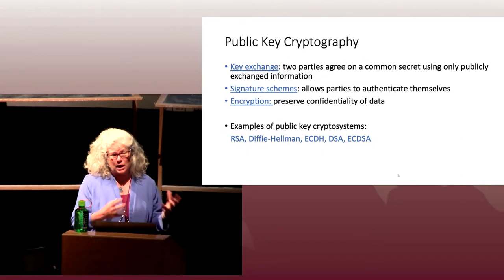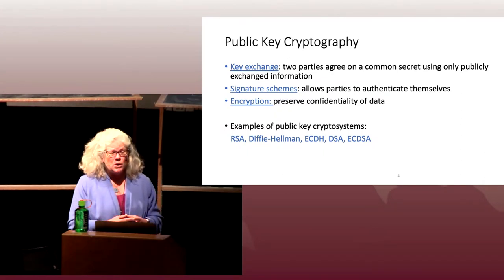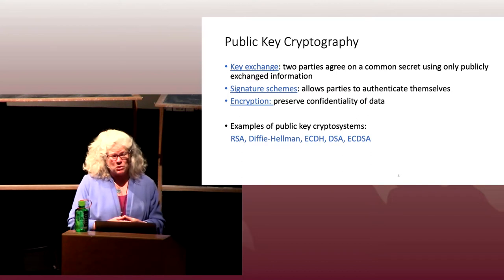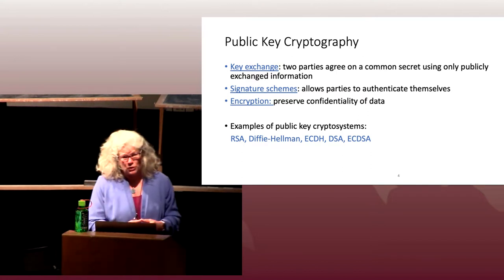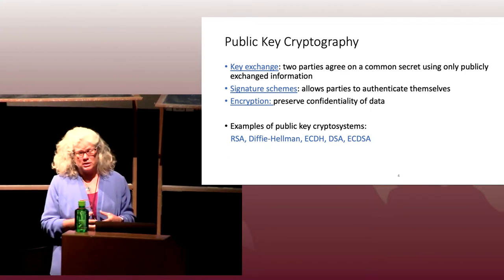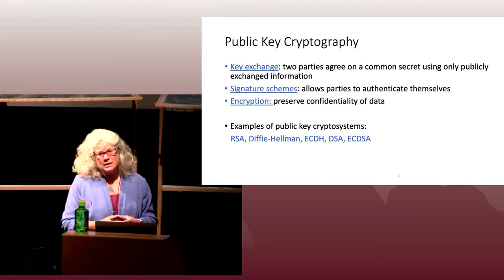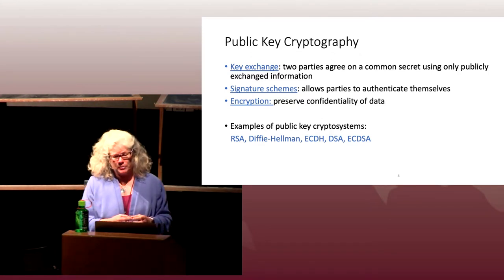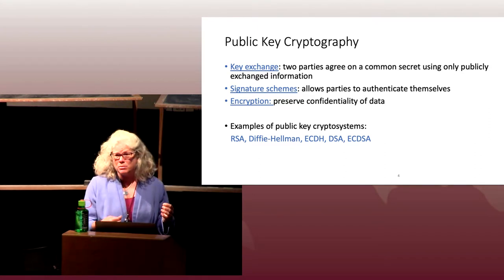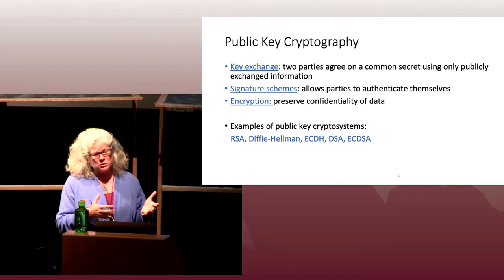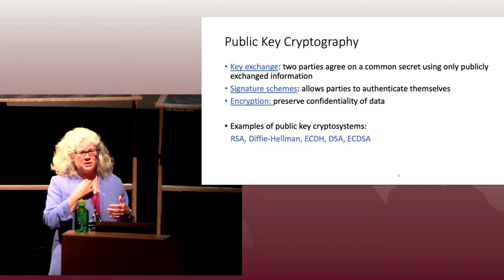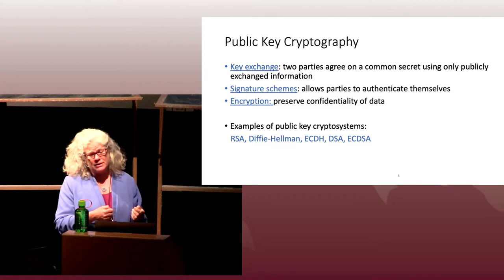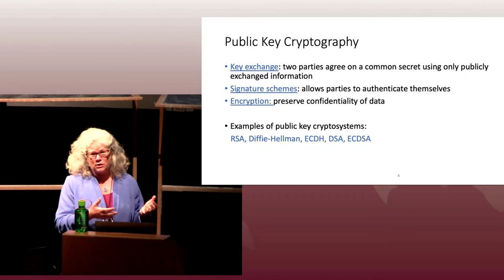Key exchange allows two parties to agree on a common secret using only publicly exchanged information, whereas signature schemes provide some mechanism to allow parties to authenticate themselves. When we say public key cryptography, we're generally referring to the idea of asymmetry — also called asymmetric cryptography — where there's a public key that everyone knows and a corresponding secret key. If you are the authentic user trying to demonstrate your authenticity, you would use your own secret key to sign something in a digital signature scheme, and then anyone could verify that signature using your public key.